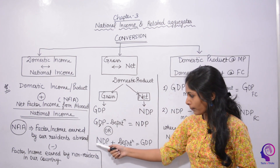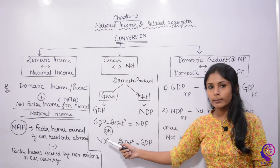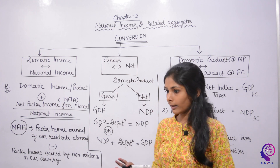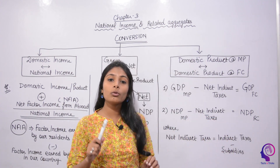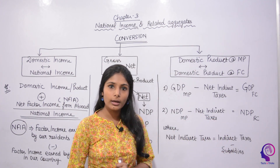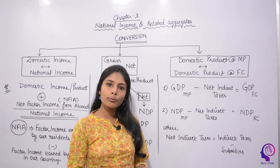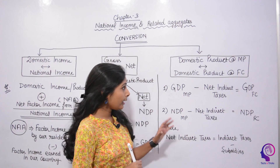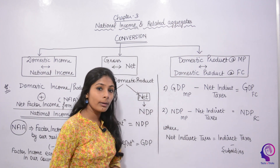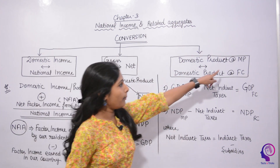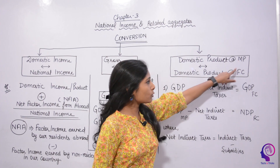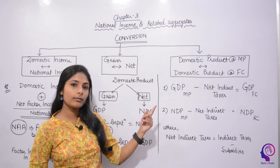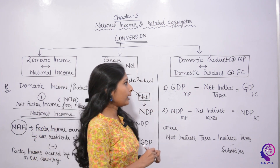This concept is very important because when you calculate national income, you need to convert GDP to NNP and NDP. Now, the last conversion is converting something at market price to factor cost, or factor cost to market price.